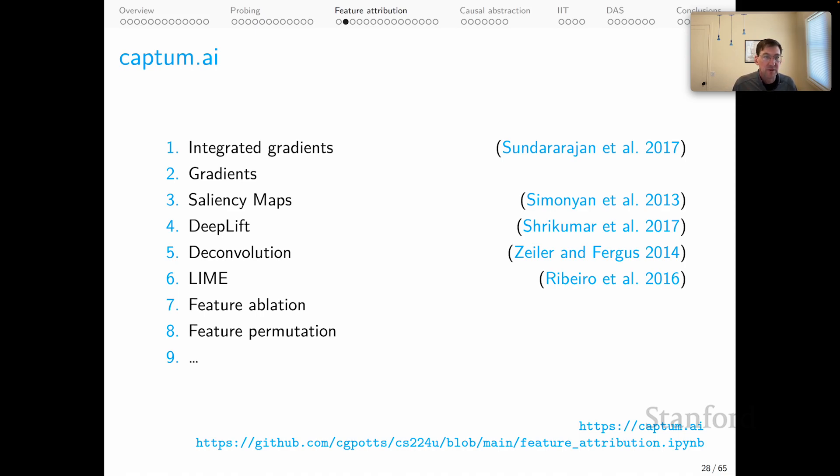For one-stop shopping on these methods, I recommend the Captum.ai library. It will give you access to lots of gradient-based methods like IG, as well as many others, including more traditional methods like feature ablation and feature permutation. In addition, if you would like a deeper dive on the calculations and examples that I use in this screencast, I recommend the notebook feature attribution, which is part of the course code repository.